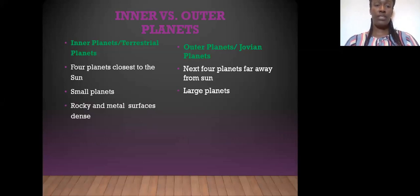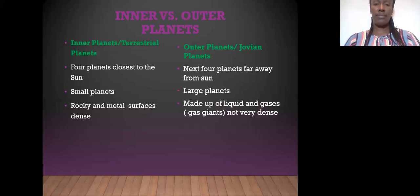The third difference, the inner planets are rocky and they are made out of rocks and metal, very dense. The outer planets are made out of liquid and gases. They are called the gas giants.